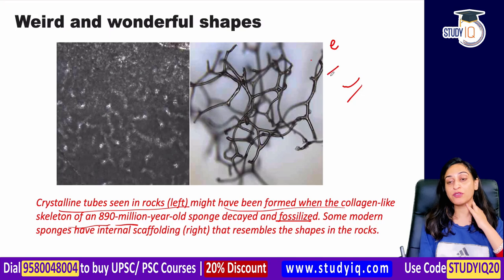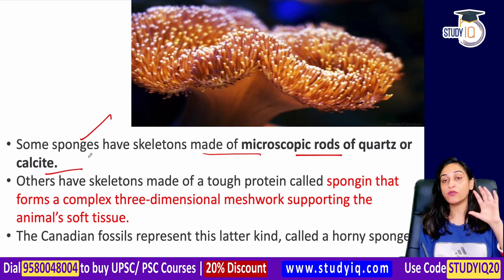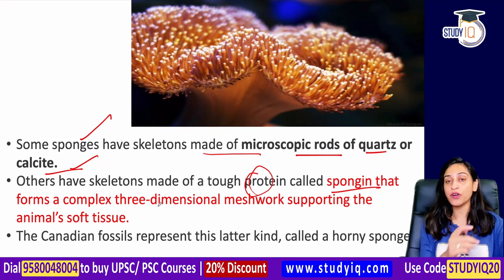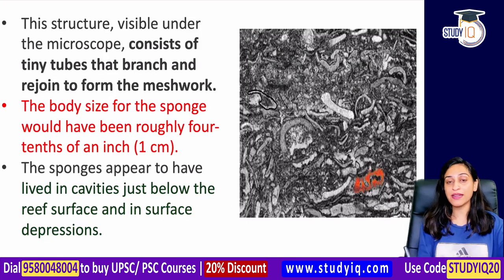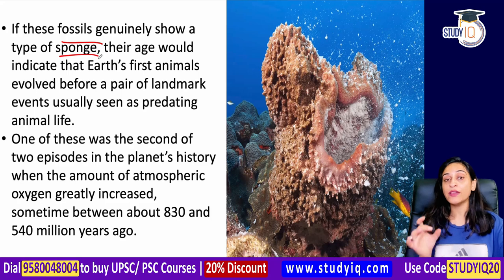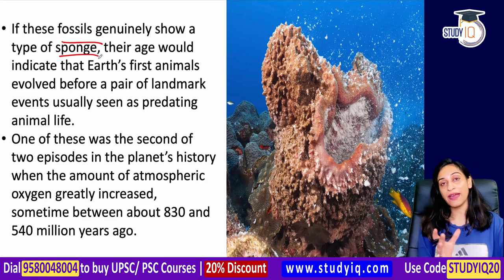Under an electron microscope, these shapes are seen to be made of microscopic rods of quartz and calcite. Some sponges have skeletons made of such microscopic rods of quartz. If these fossils confirm a type of sponge, and these sponges are genuinely that old, the date of the first fossil animals on Earth will be pushed significantly further back.